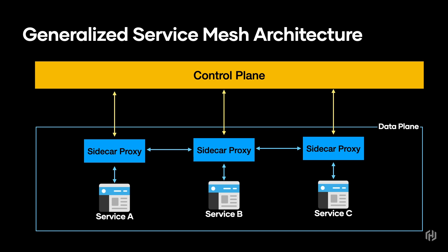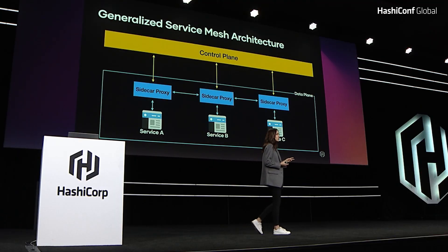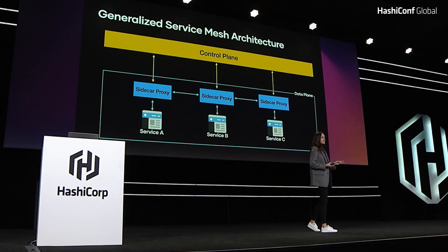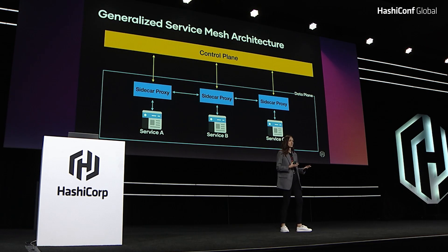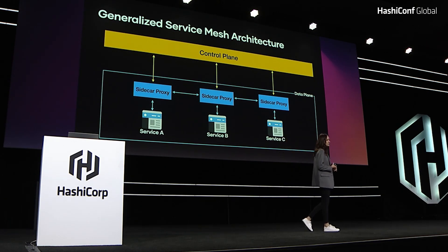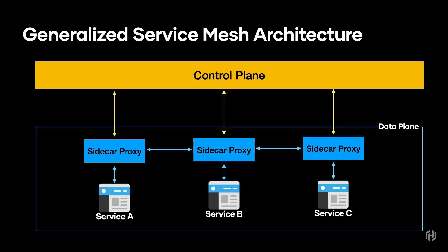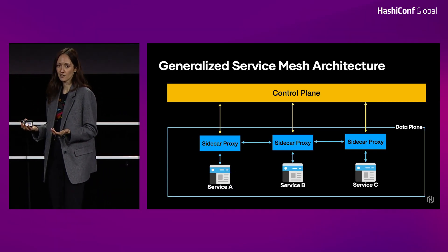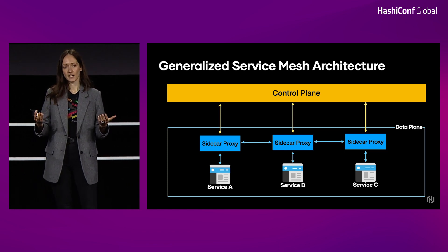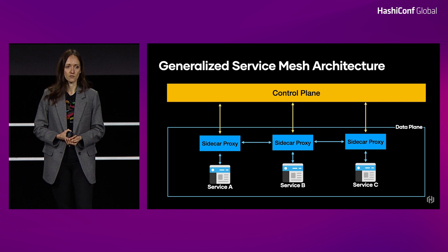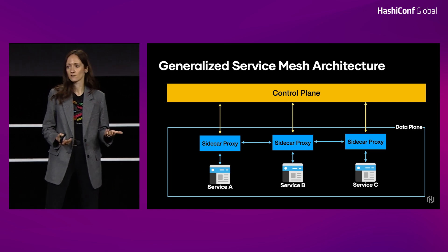Now I want to look at the generalized architecture for a service mesh. There are two main components: the control plane and the data plane. The data plane is responsible for routing your traffic, typically done with some sort of proxy that helps you route traffic between your services. The control plane controls how this traffic is routed — it tells the data plane things like the IPs of your services or any advanced configuration you may have.